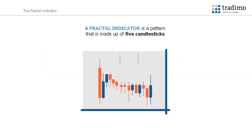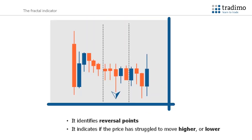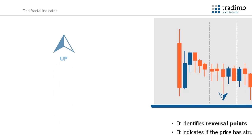A fractal indicator is a pattern that is made up of five candlesticks. It is used to identify reversal points in the market, as it indicates where price has struggled to move higher or lower. As a trader, you can use fractals to get an idea of the potential direction price may move in. There are two types of fractals: an up fractal and a down fractal.